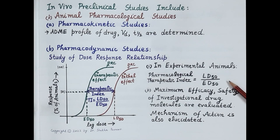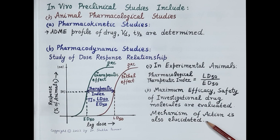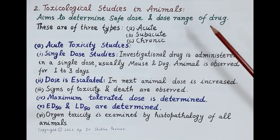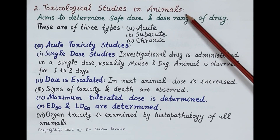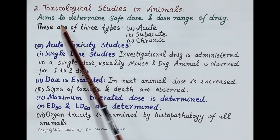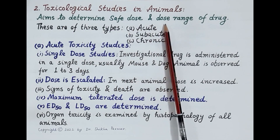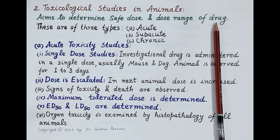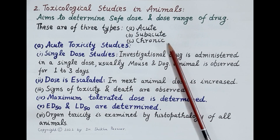Apart from determining the pharmacological therapeutic index in animals, maximum efficacy, safety, and mechanism of action of investigational drug molecules are also evaluated. Regarding toxicological studies, the primary aim is to determine safe dose and dose range of the drug candidate. Toxicological studies are mainly of three types: acute, sub-acute, and chronic toxicity studies.